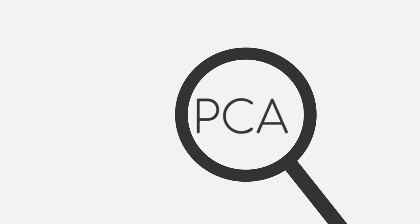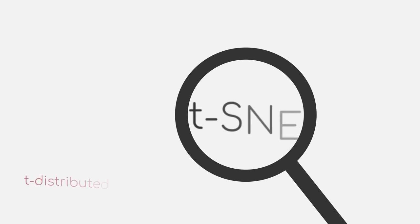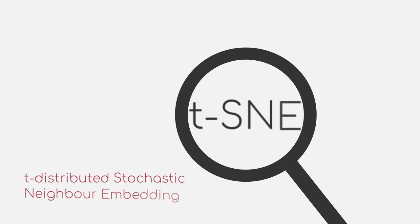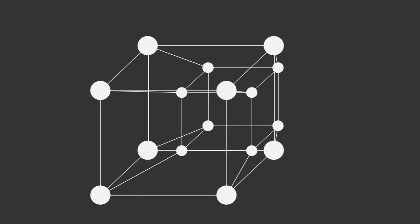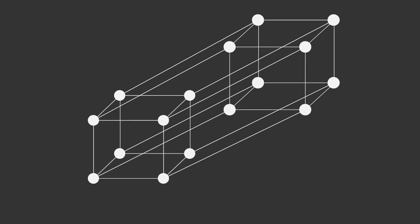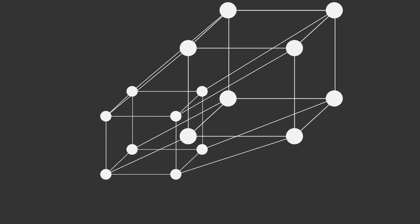In the last video, we introduced the problem of dimensionality reduction and presented principal component analysis as one of many algorithms. As PCA is not the only algorithm, we also want to give you an introduction to another very popular algorithm, the t-distributed stochastic neighbor embedding. Oh well, just say t-SNE. Similar to PCA, t-SNE is often used for visualizing high-dimensional data into a three-dimensional space.